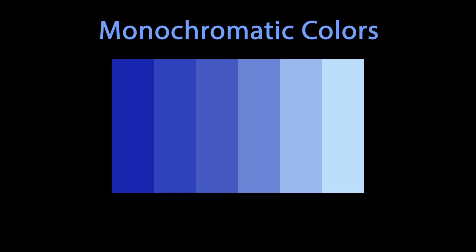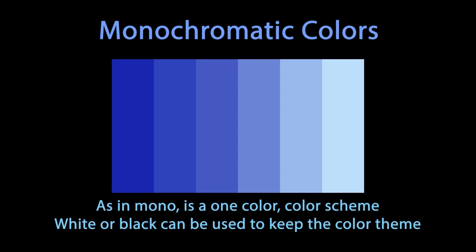Monochromatic color. Monochromatic color, as in mono, is a one color color scheme. White or black can be used to keep the color theme.